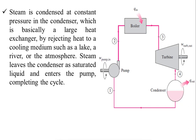Steam is then condensed at constant pressure in the condenser, which is basically a large heat exchanger, by rejecting heat to a cooling medium such as a lake, river, or cooling tower. A coolant is used in the condenser to cool the steam. Steam leaves the condenser as saturated liquid, enters the pump, and thus completes the cycle. At the outlet of the condenser, steam is converted into saturated liquid, and then it is pumped back into the boiler.